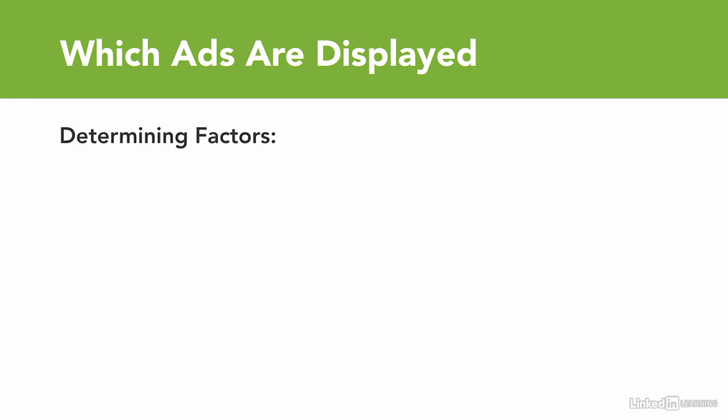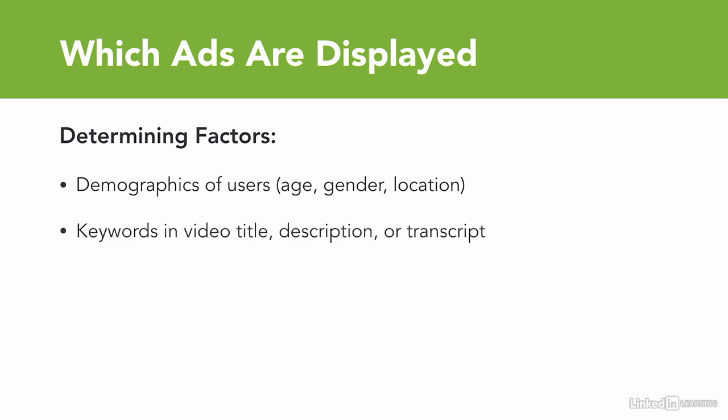What are some of the factors that determine which ads are displayed on your video? First of all, the demographics of the users — the age, gender, and location of the users watching your video will help determine which ads those users actually see. The keywords within your video title, description, and transcript of your actual video also help to determine which ads are going to be displayed.